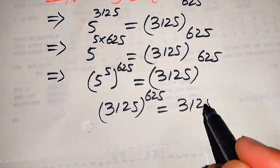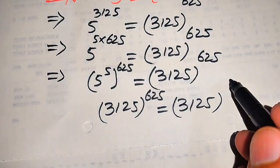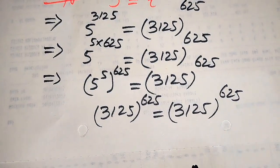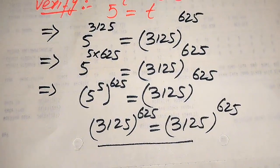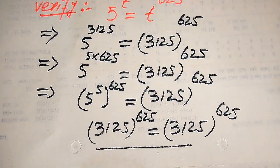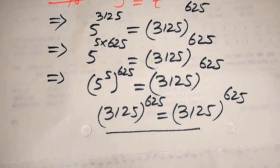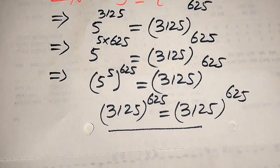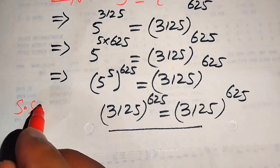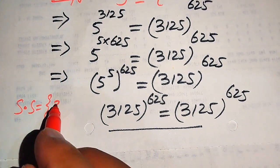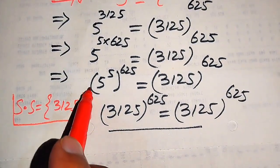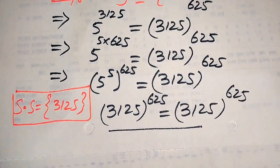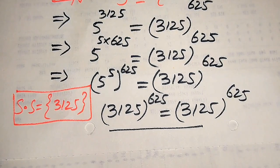Both sides are equal, which means t equals 3125 satisfies our given equation. We finally conclude that the solution set of this question is {3125}. This is our final answer. Thank you so much for watching this video. Please subscribe to my channel for more exciting videos.